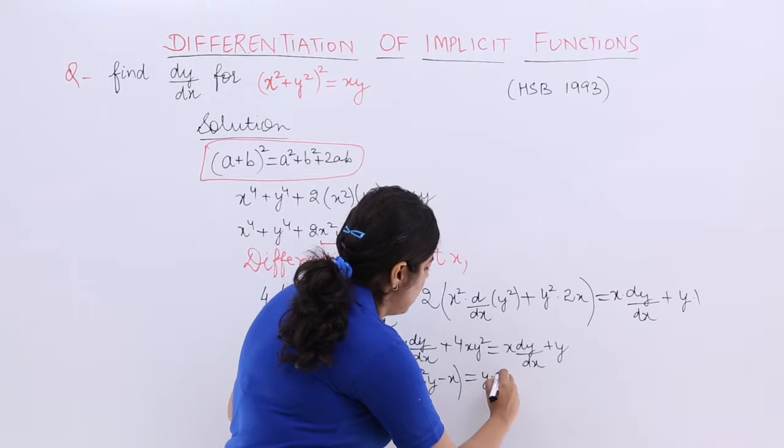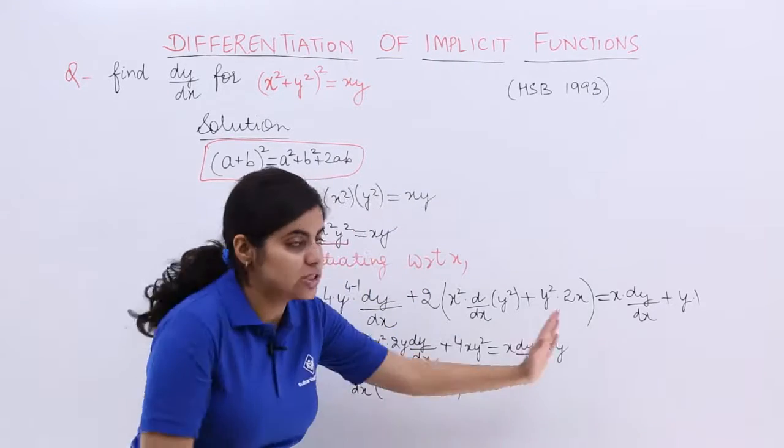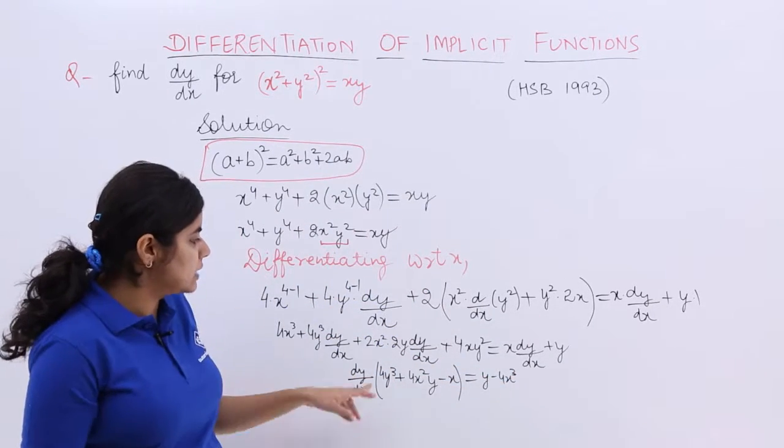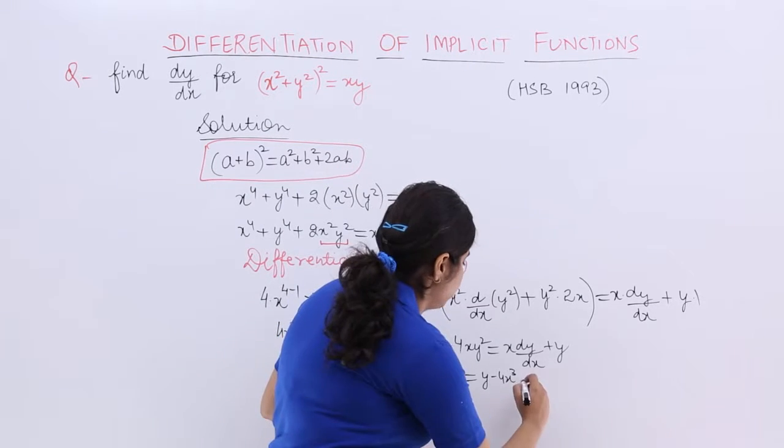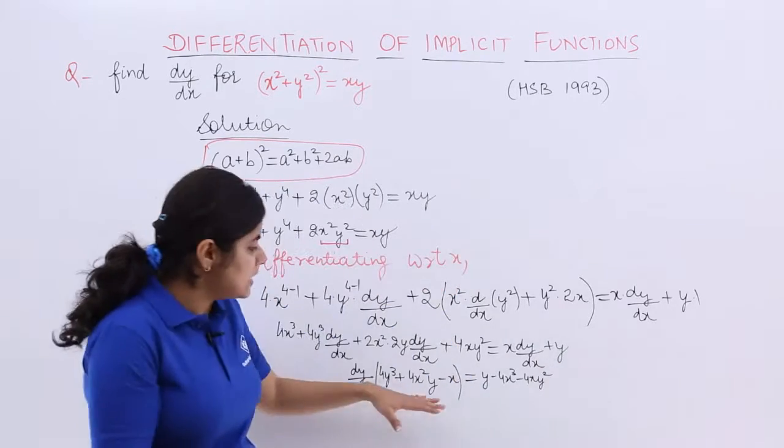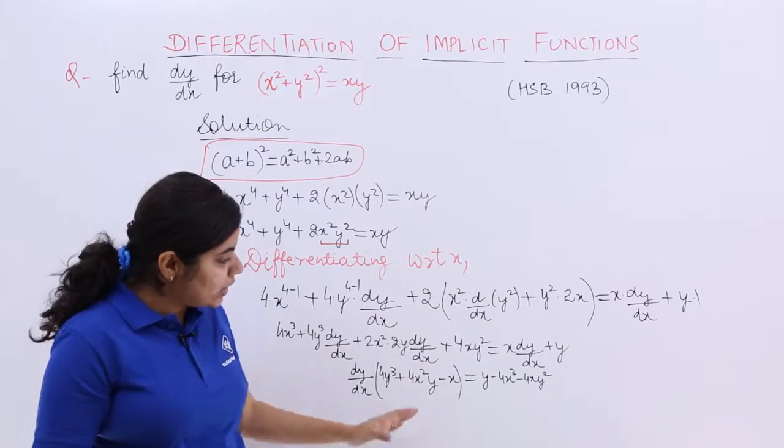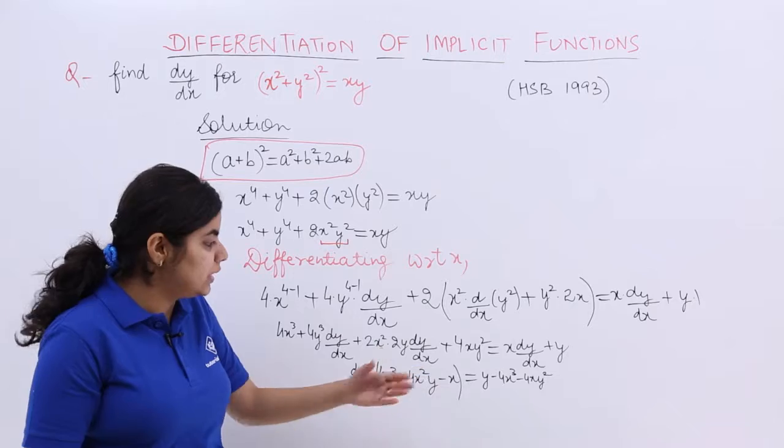y minus 4x³. y is already there. 4x³ goes to the other side. And rest minus 4xy².